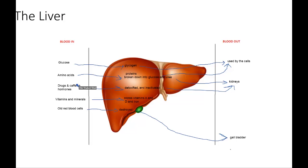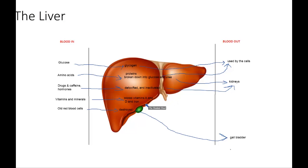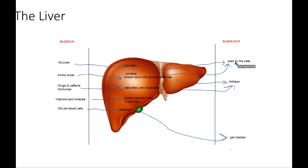So imagine what would happen if you didn't have a proper functioning liver. All of this would not take place, and the blood in would be the same as the blood out. You don't want a build up of urea, drugs, caffeine, hormones, and old red blood cells. You don't want waste products building up inside your blood — it can poison your body. So we need a proper functioning liver to filter our blood so we can have usable substances and also remove waste.